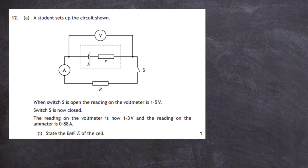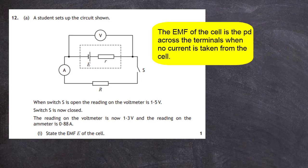Question 12 from the 2019 Higher Physics SQA exam, section 2. A student sets up the circuit shown. When switch S is open, the reading on the voltmeter is 1.5 volts. When switch S is closed, the voltmeter reads 1.3 volts and the ammeter reads 0.88 amps. For one mark, we have to state the EMF of the cell. The EMF of the cell is the potential difference across the terminals when no current is taken from the cell.